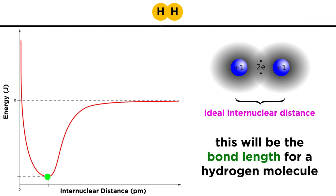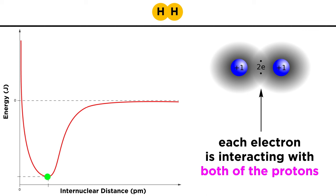This is the ideal distance between the two protons, and therefore the precise bond length for a molecule of hydrogen. This decrease in potential energy occurs because each electron is interacting with both protons, and this is a stabilizing and therefore energetically favorable situation.